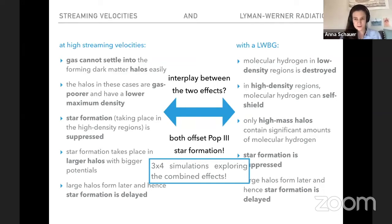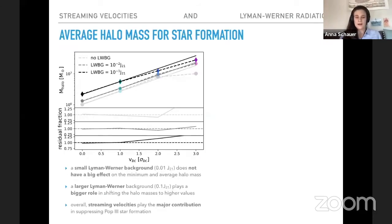So we increased our simulation sample from four simulations with different streaming velocities and three simulations with no streaming velocity, but different Lyman-Werner backgrounds to a combination of those. And then we study the average halo mass for star formation. So how massive does a halo need to be to form stars? And what you can see here is the halo mass is a function of streaming velocity. And you can see this increases as we've seen before and understood before for both increasing streaming velocity. And then in different colors, I have two different Lyman-Werner backgrounds and then increases also for different Lyman-Werner backgrounds. But the streaming velocity plays the larger role.